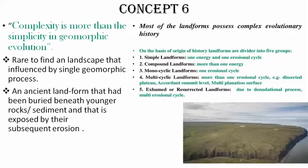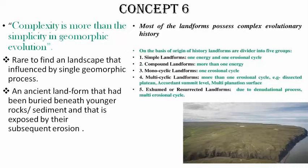Horvath in 1952 divided landforms into five types: simple, compound, monocyclic, multicyclic, and exhumed. A simple landform has only one energy and one erosional cycle — meaning only one process like fluvial, aeolian, or glacial, and one cycle of youth, maturity, and old age. Compound means more than one energy — for example, both water energy and glacier energy.